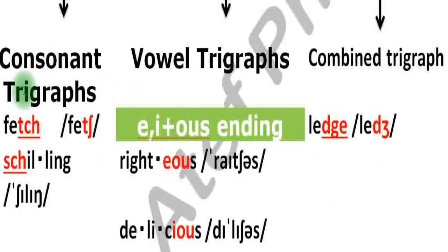Consonant trigraphs: the three consonant letters T-C-H produce a single consonant sound. Similarly, the three consonant letters S-C-H make a single consonant sound.